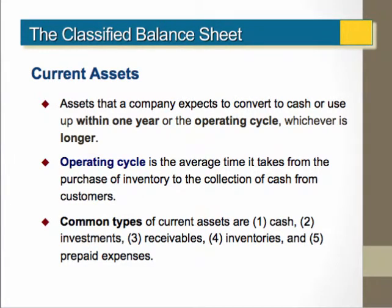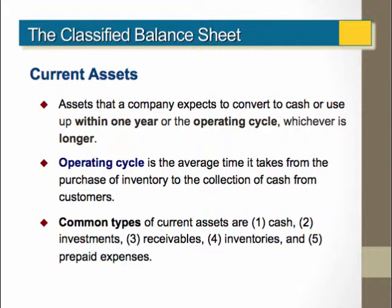Here is the description of current assets. Current assets are assets that a company expects to convert to cash or use up within one year or an operating cycle, whichever is longer. Remember, different companies may use a different operating cycle other than a year as long as they're consistently applied. Companies will have different types of current assets on their balance sheet. However, the most common types are cash, investments, receivables, inventories, and prepaid expenses. We will go into each of these different types of current assets in other chapters.